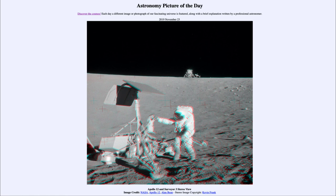So if we were to go back to the moon today, we would be able to see these footprints exactly as they looked when the astronauts left them. That was our picture of the day for November the 23rd of 2019, titled 'Apollo 12 and Surveyor 3 Stereo View.' We'll be back again tomorrow for the next picture — have your glasses ready.